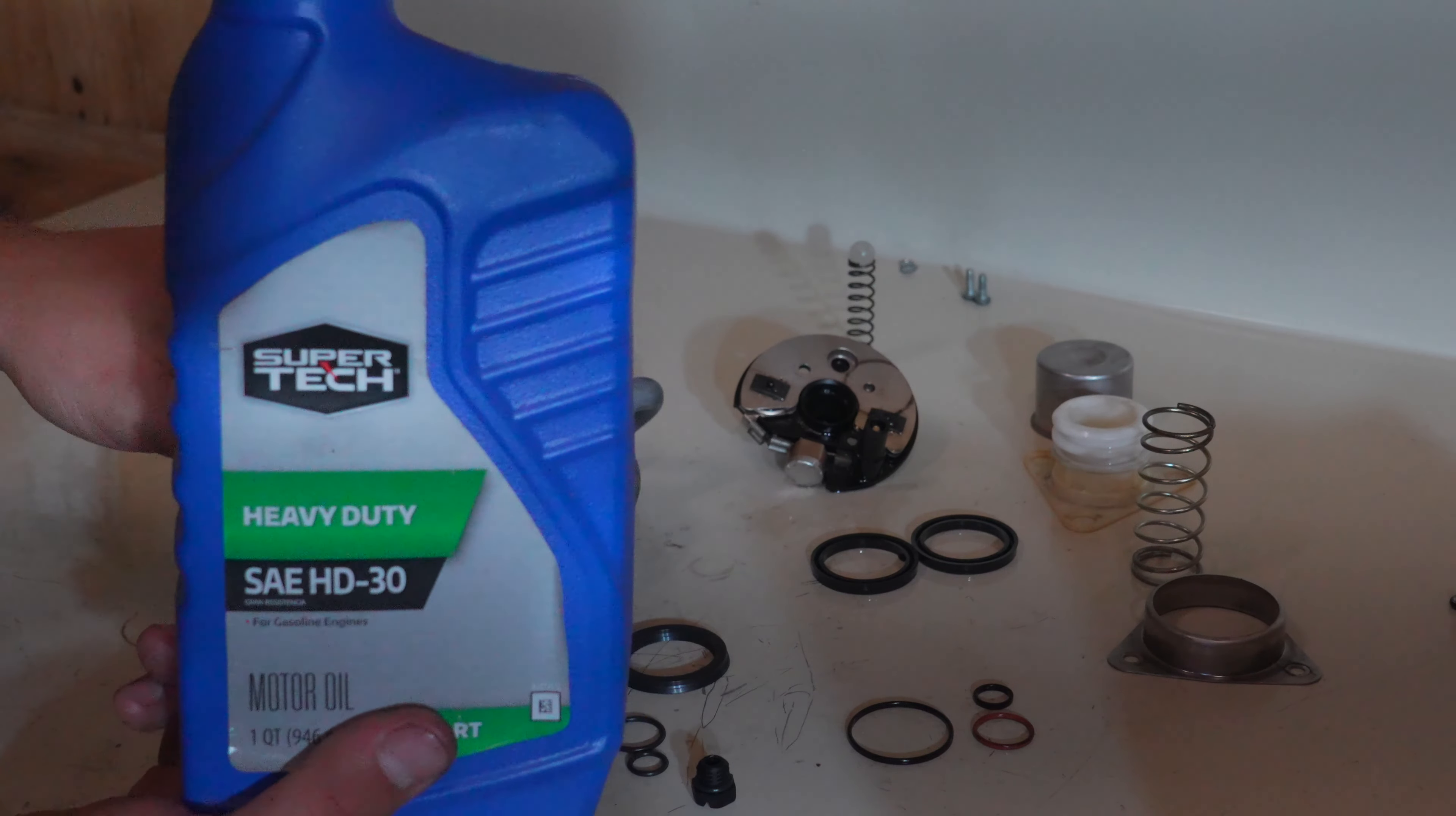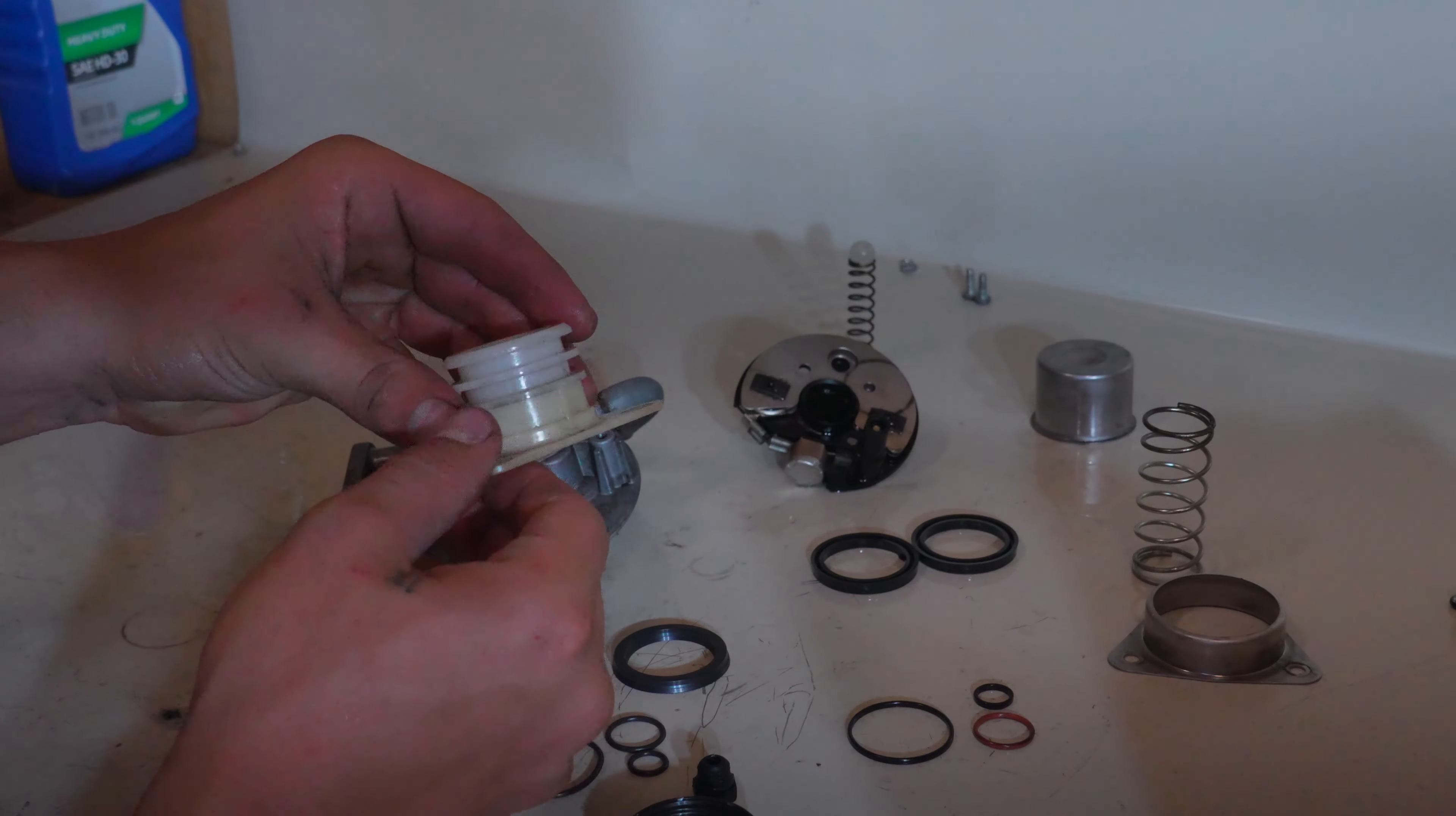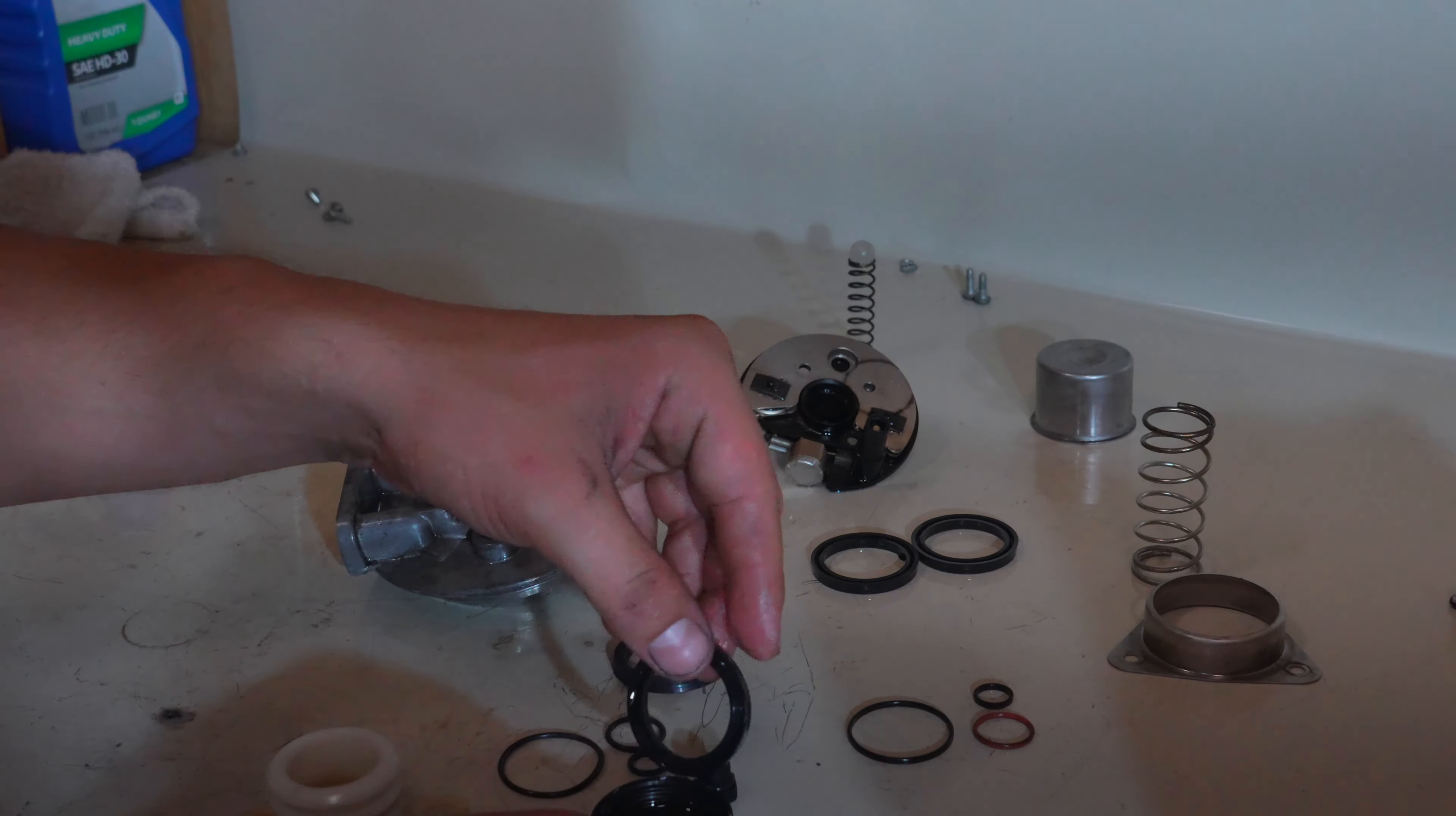We'll use some motor oil to lubricate all the new O-rings before we put them on so that we don't rip or tear them. All right, so I have me a cap full of 30-weight motor oil. You can use whatever motor oil you have laying around. This is just to lubricate all of our seals as we put them back in. So let's go ahead and start with our primer pump seal. I'm going to wipe this down real quick, make sure this is a good clean surface to work on.